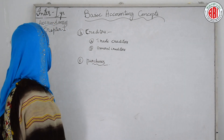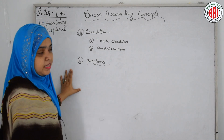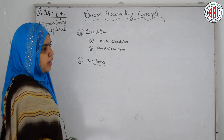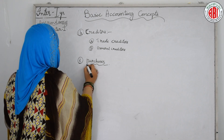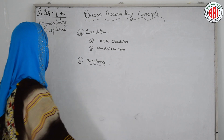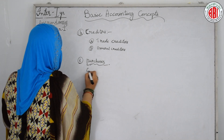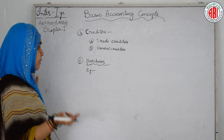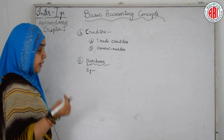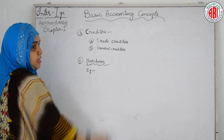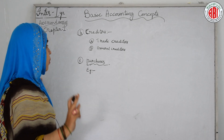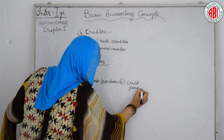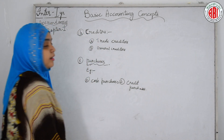Our next basic accounting concept is purchases. Purchases are the expenses made by the business while buying goods, services, furniture, or any other things. Purchases come under the category of nominal accounts. Examples of purchases are machinery purchased, furniture purchased, building purchased, computer purchased, and raw material purchased. Purchases are of two types: cash purchases and credit purchases.